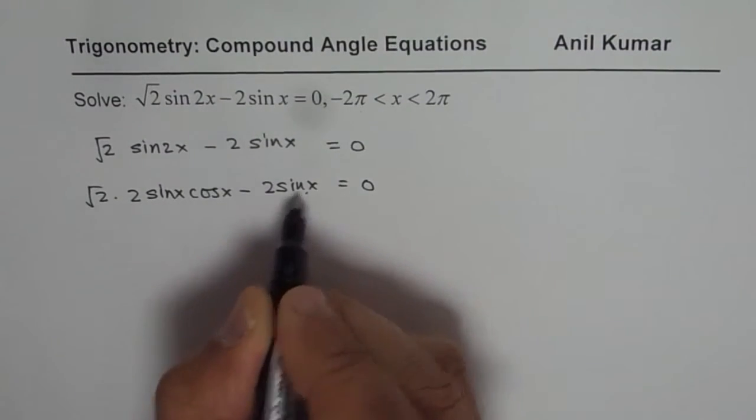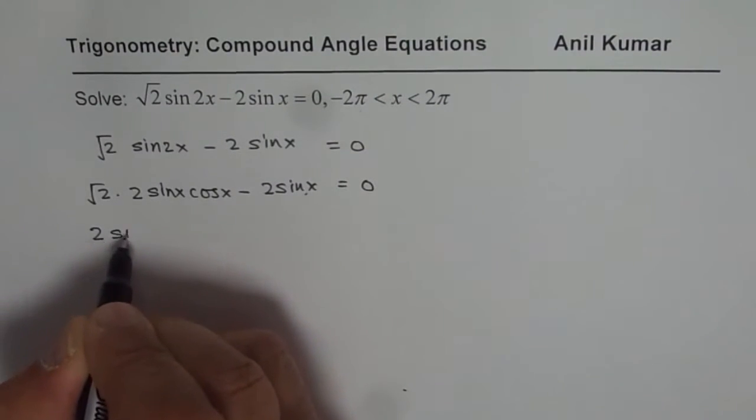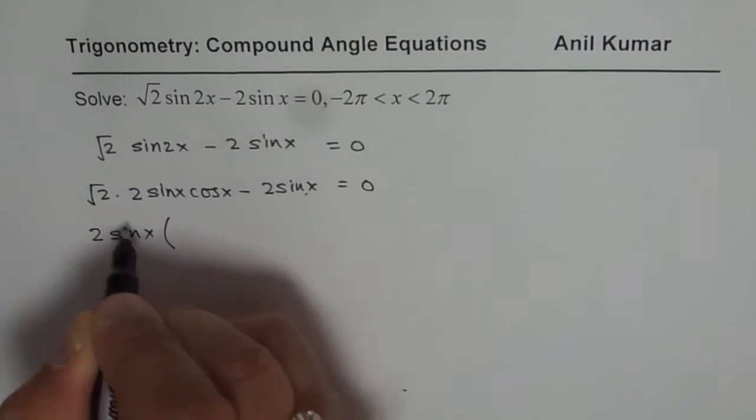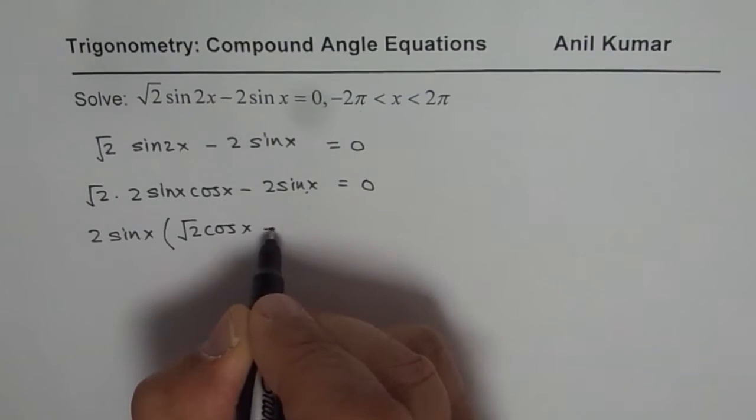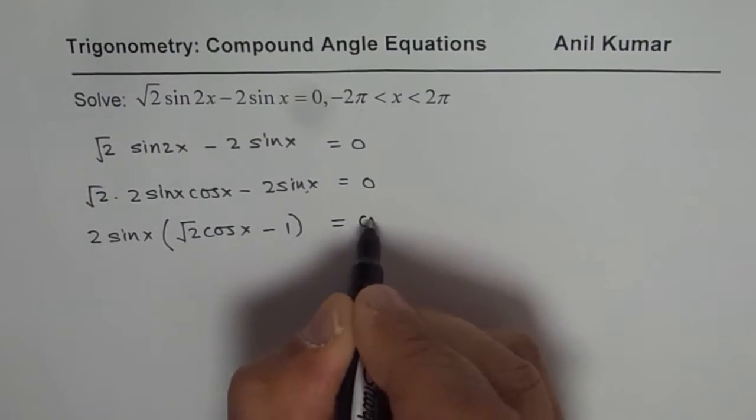Now 2 sin x is common. So we can say 2 sin x is common, and we get √2 cos x - 1 = 0.